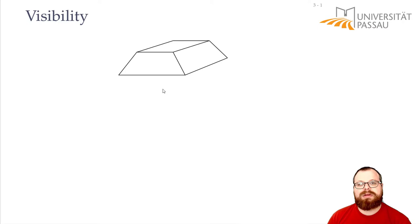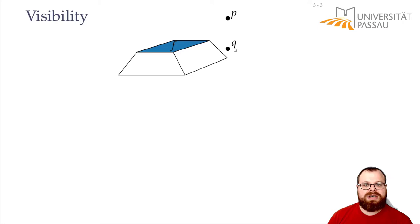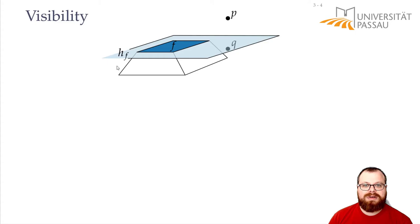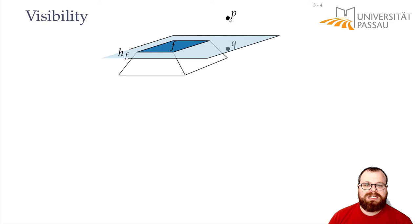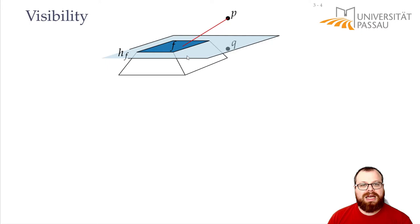Let's say we have a polytope — the convex hull of the points already processed — and I want to look at a single face f. There might be two points p and q, and I want to know which of them sees face f. We take the plane hf spanned by face f. Point p lies above the plane and point q lies below it; in particular, q lies on the same side as the polytope and p lies on the other side. Then f is visible from p but not from q. Informally, from p we can draw a segment to the face without crossing any part of the polygon, but from q we would have to go through the inside of the polygon.